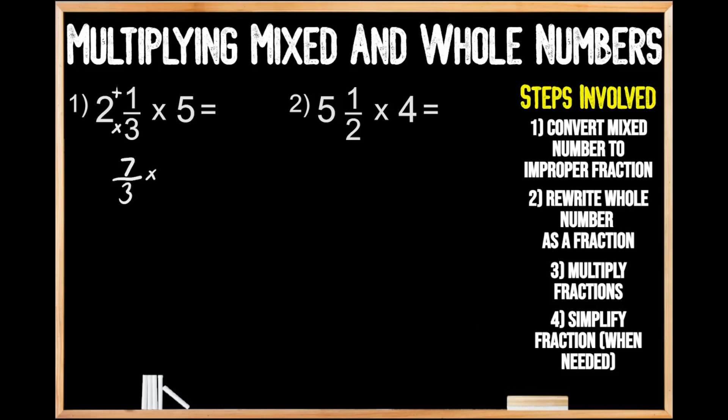Now we're going to move on to step number two, where we're going to rewrite our whole number as a fraction. Our whole number is going to be our numerator, and we're going to give this fraction a denominator of one, because five over one has the same value as five — it represents five whole groups of one.